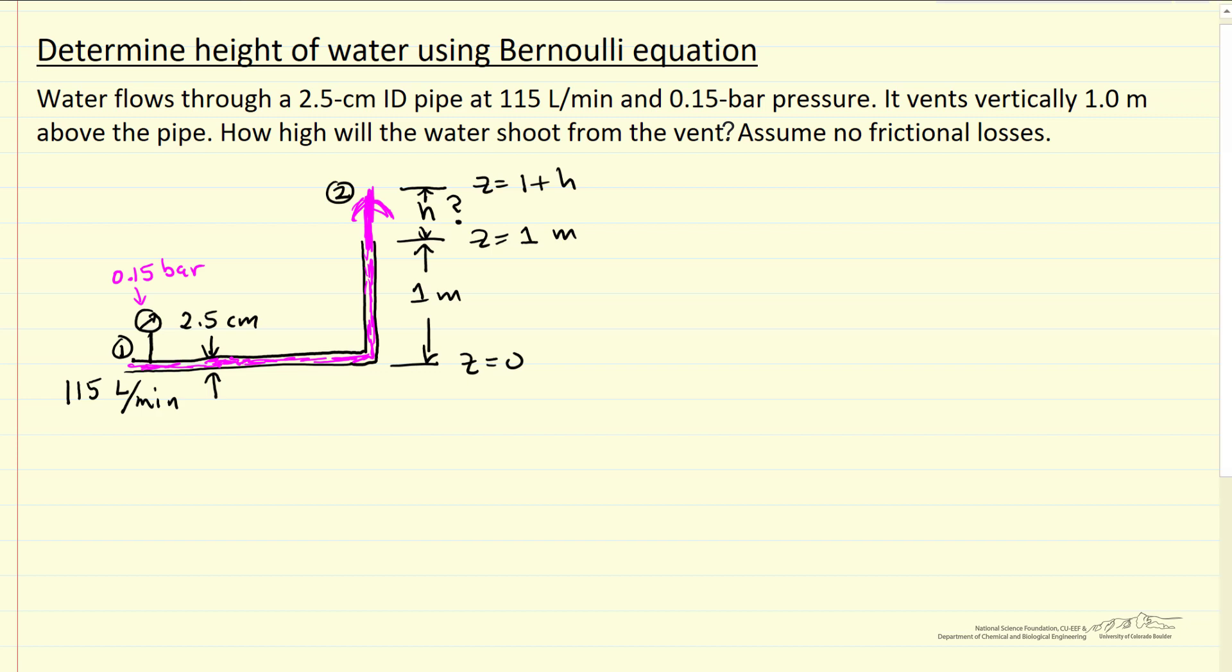So let's look at the Bernoulli equation, where we have at point one a pressure, the density order, the velocity of point one squared over two, and g times z one, and then we have the same thing at point two.